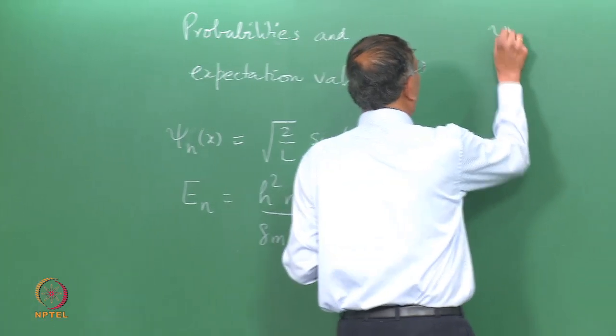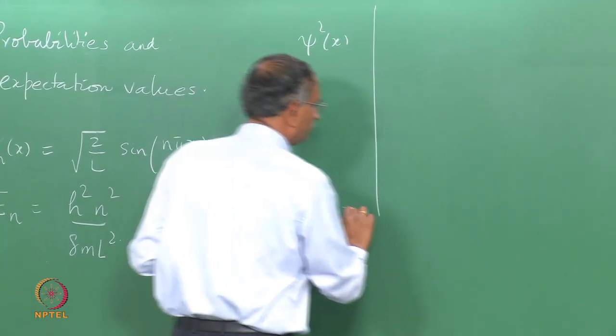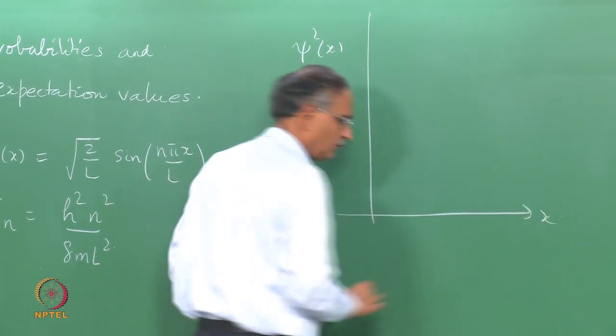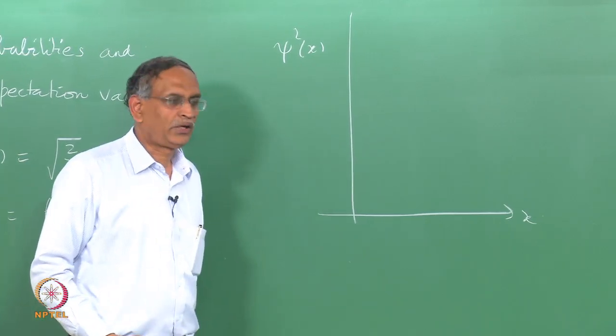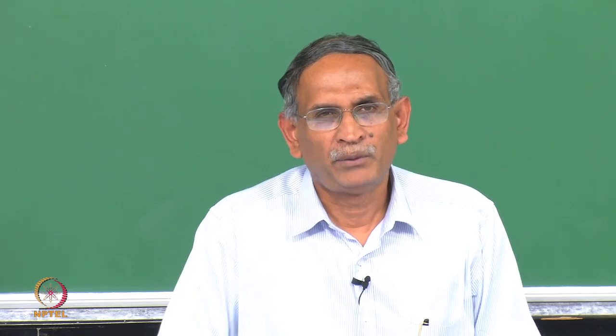If you plot ψ² of x as a function of x, you get some ideas about what these probabilities mean. Let me show this graph for some value of the box length l, and we have a √(2/l) which is a prefactor for the wave function.